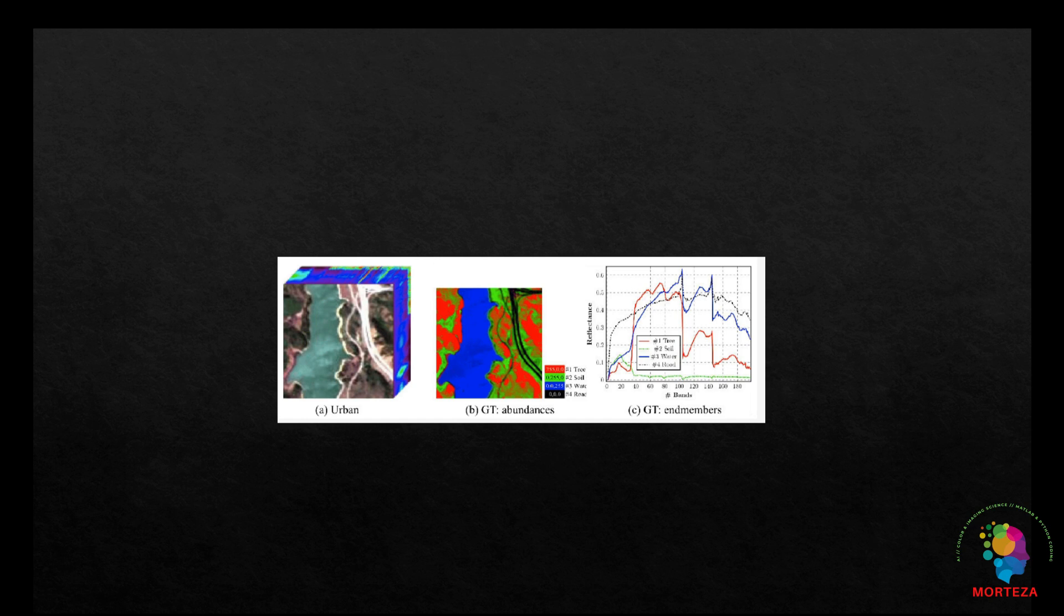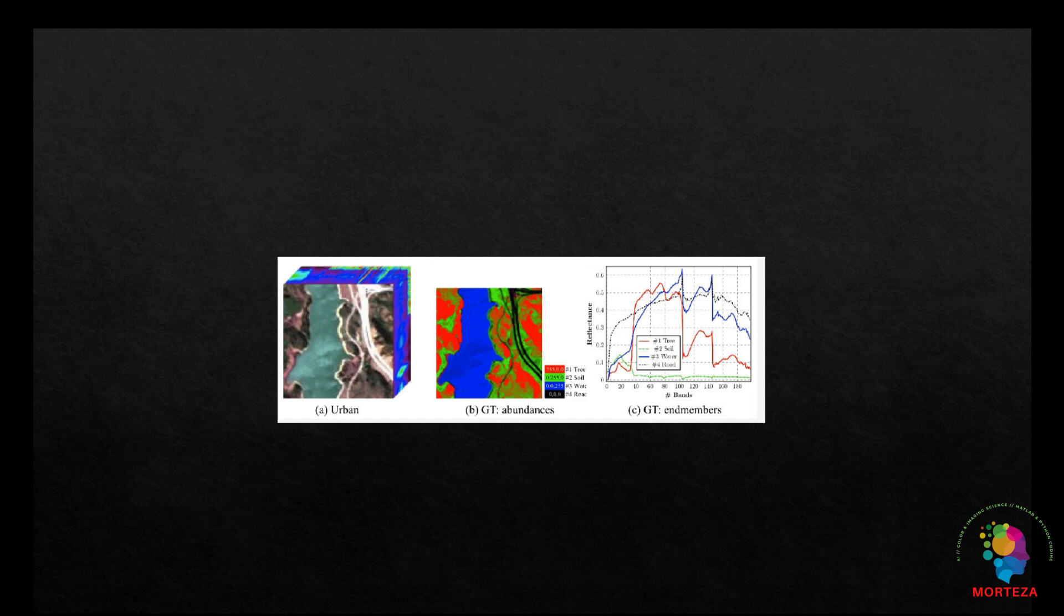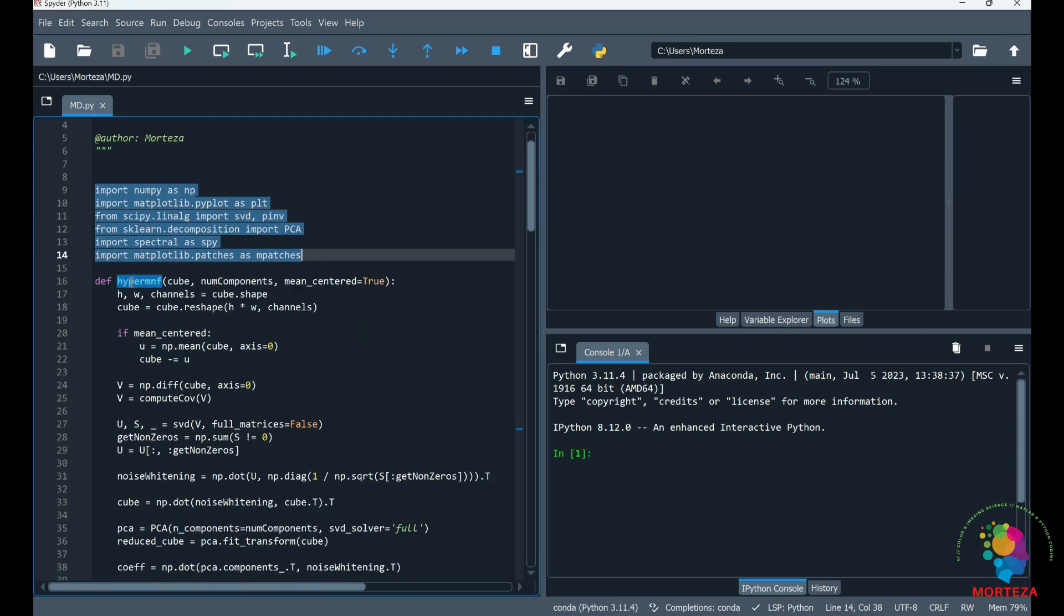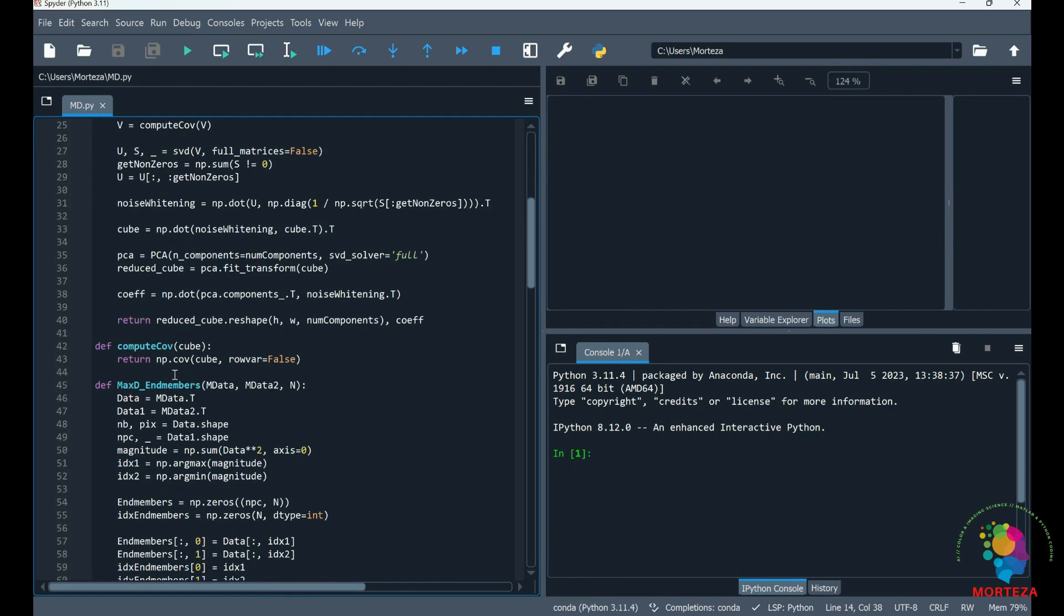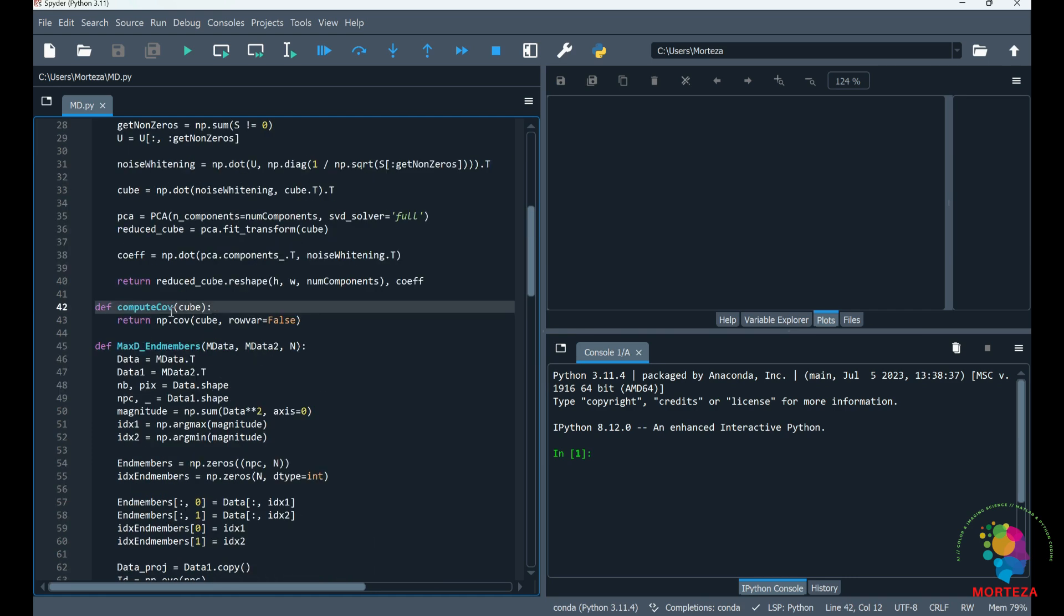In other words, the spectral reflectance present in the hyperspectral image is assigned to one of the end member classes according to how similar they are to them. Let's go to Python and perform this classification process. Okay, here's the code for this problem.